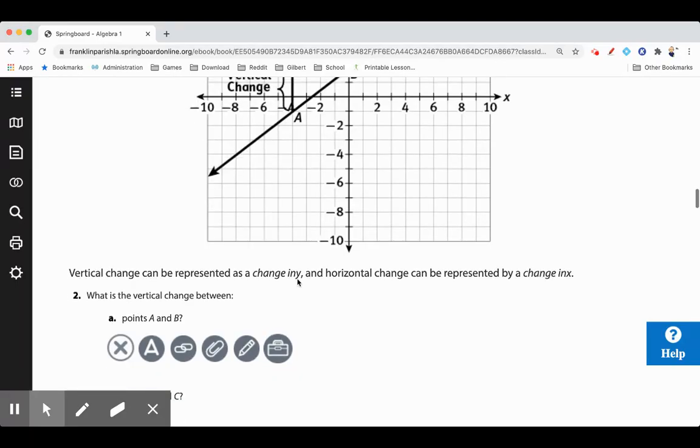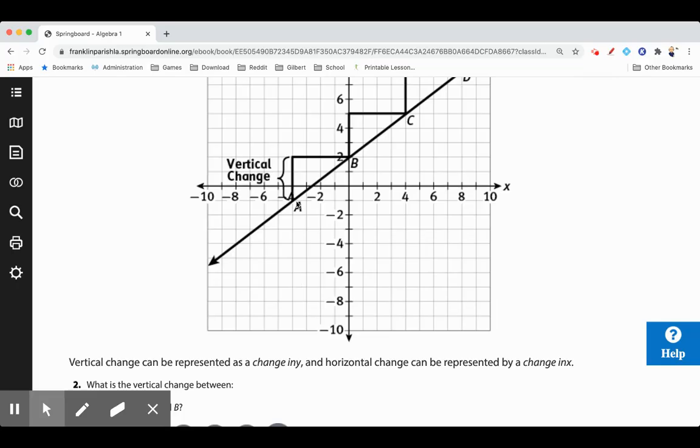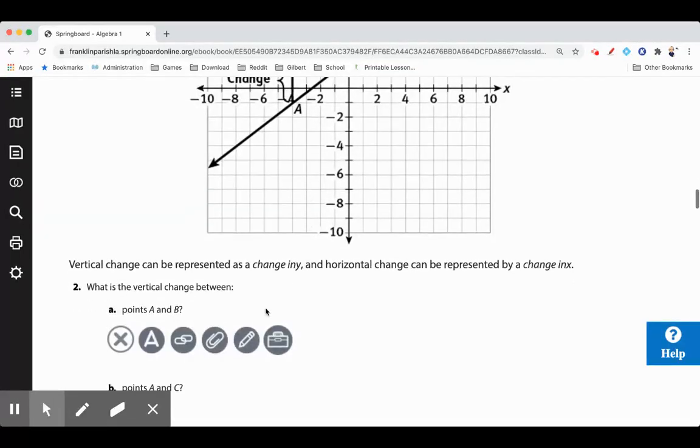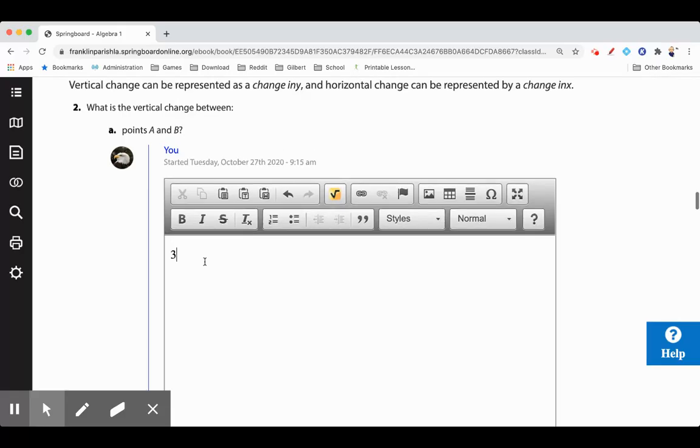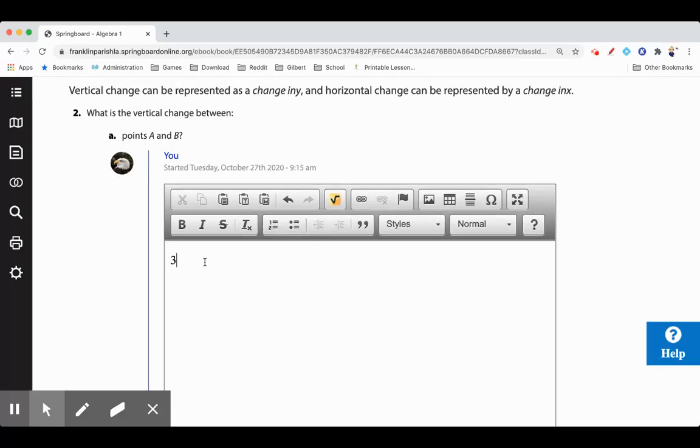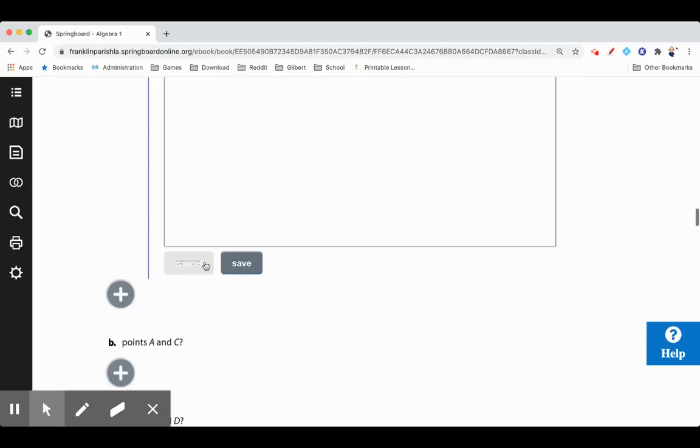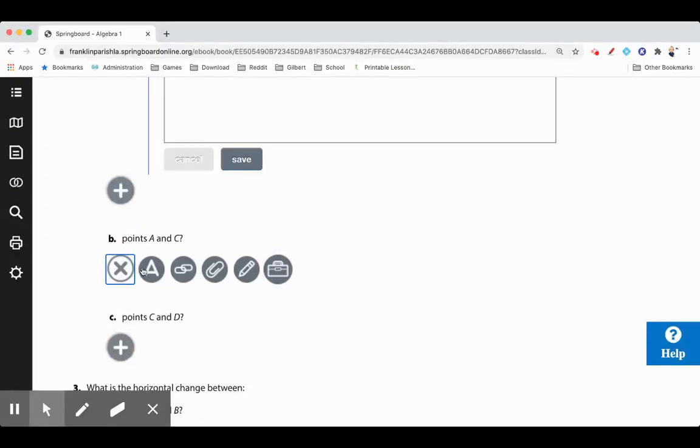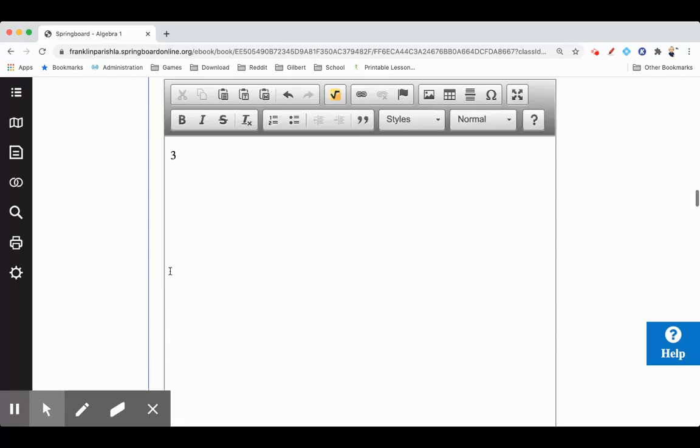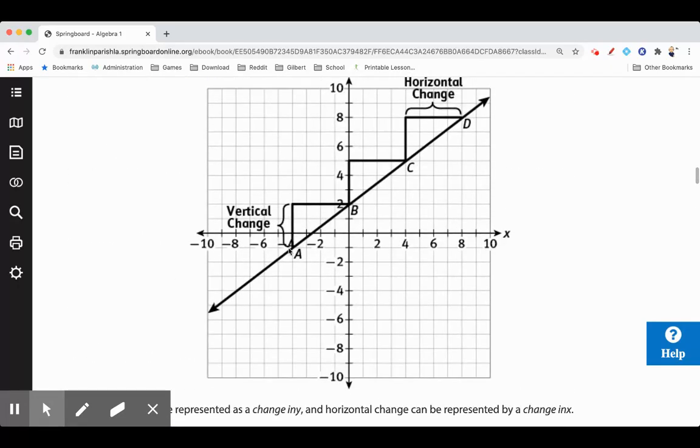What's the vertical change between point A and B? Well A is at negative 1, B is at 2, so that's 1, 2, 3. Points A and B are 3 vertically apart. How about points A and C? Well A and C are 1, 2, 3, 4, 5, 6, 6 apart.